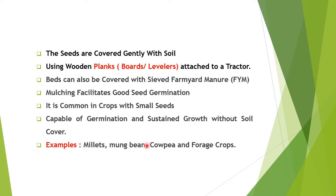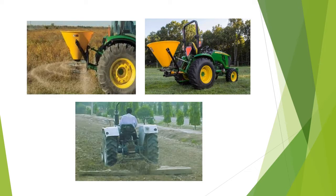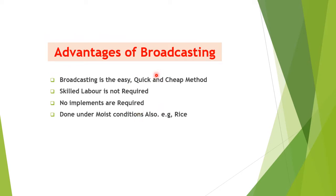Examples of crops suited for broadcasting include millets, mung bean, cowpea, and forage crops. Tractor-mounted mechanical broadcasters disperse seeds at a regular rate, followed by a leveler to cover the soil. This method is also used for rice seedlings. Advantages of broadcasting: it is an easy, quick, and cheap method; no skilled labor is required; and no implements are needed except in mechanized operations.